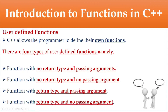Now, user-defined functions. Built-in functions will be covered in the next video; this video concentrates on user-defined functions. C++ allows programmers to define their own functions. There are four types: function with no return type and passing arguments; function with no return type and no passing arguments; function with return type and passing arguments; function with return type and no passing arguments.